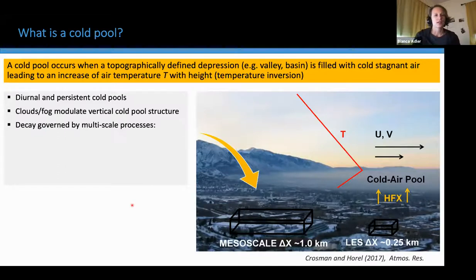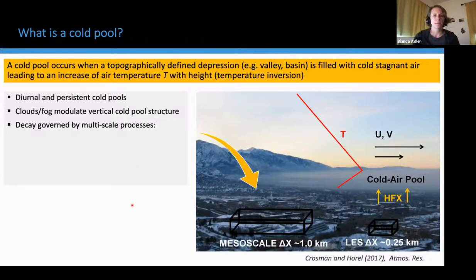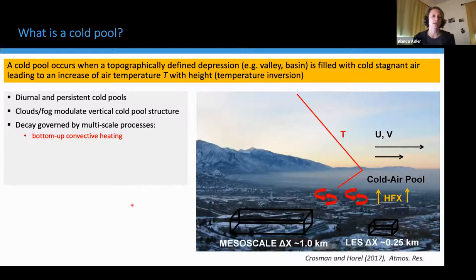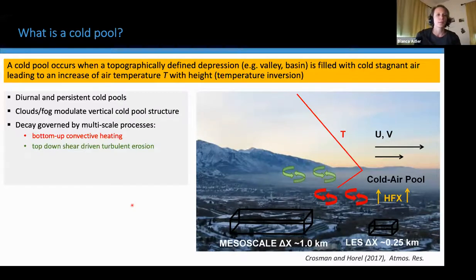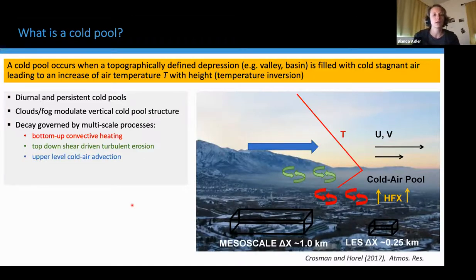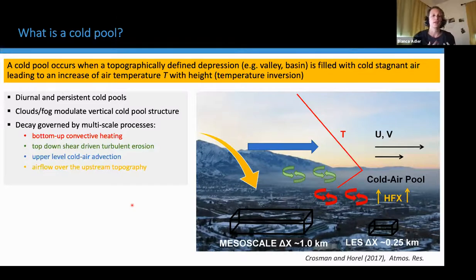For many applications, the decay of the cold pool is the most relevant part. Very often, multi-scale processes are involved. These processes range from smaller scales, such as bottom-up convective heating or top-down shear-driven turbulent mixing, to larger-scale processes such as upper-level cold air reduction with synoptically-driven flow, or mountain waves and downslope windstorms, which form when the flow interacts with upstream orography.